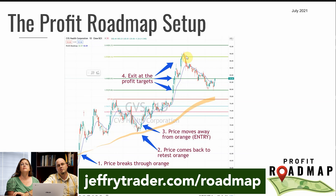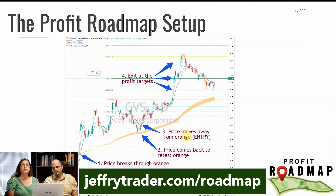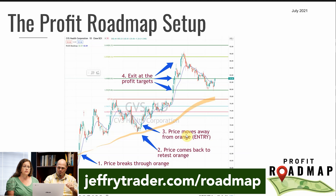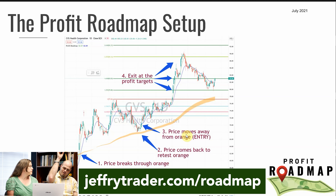You can see it on the chart on the slide — it tried once, tried twice, and the third time was the charm and it took off on through. Once it got up to the extension target, that was it for that trade. But if you were in shares, it never got anywhere close to coming back to where you got in — all the way down at point three. That's really the best example of a Profit Roadmap trade. When we do the watch list, we're looking for the ones that bounced off the roadmap line and give people a chance to get in while it's still close to the roadmap line before it takes off.